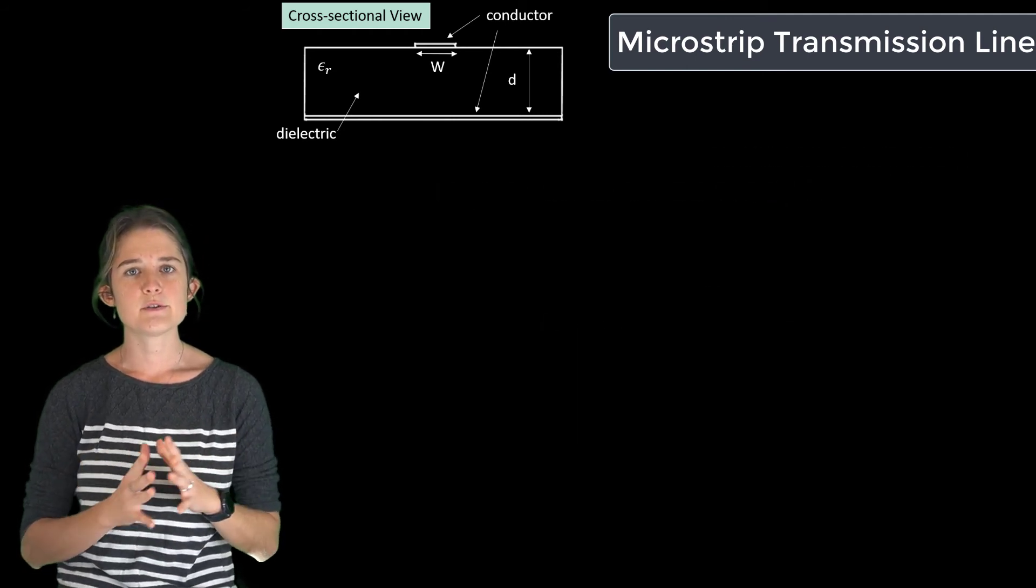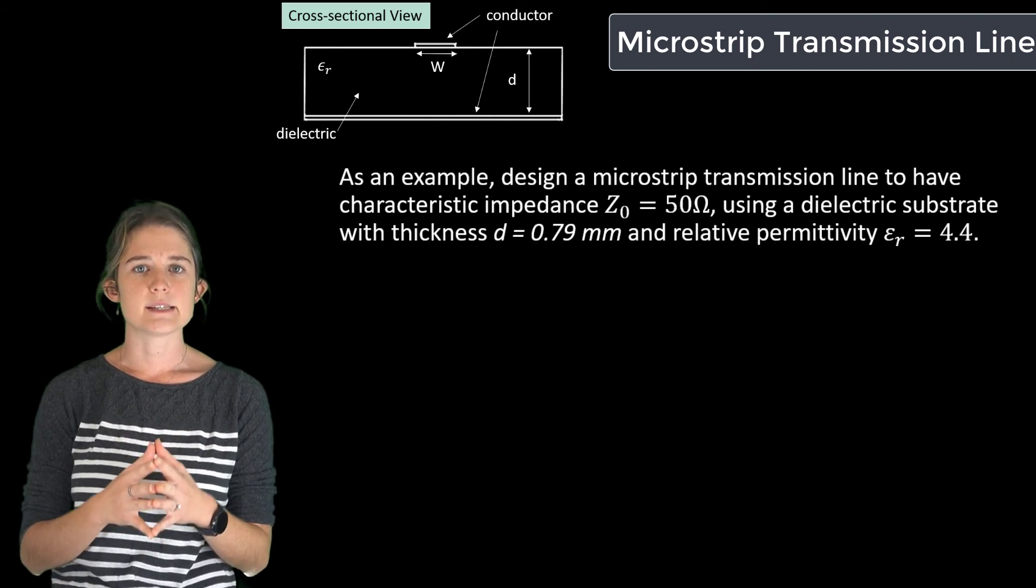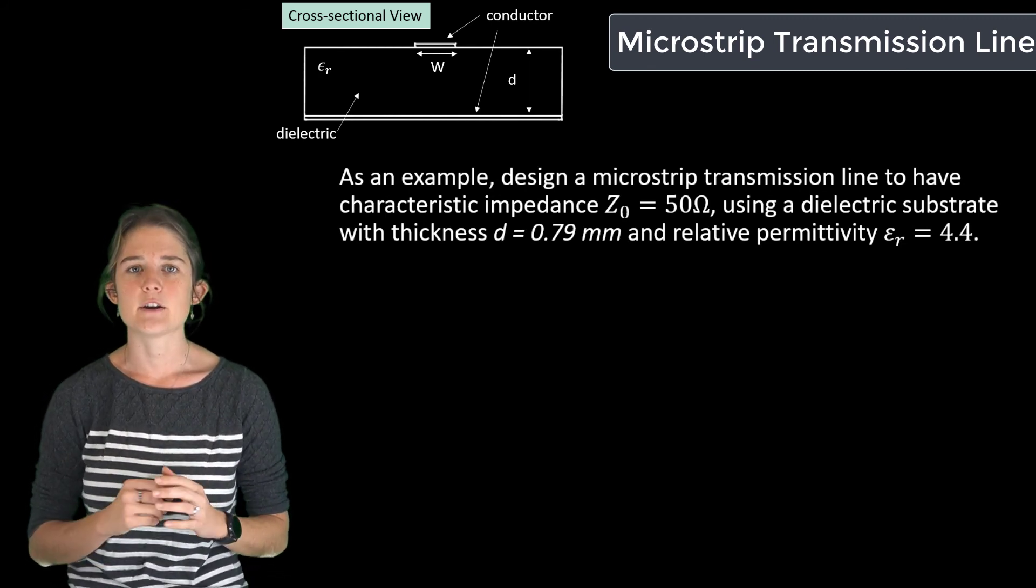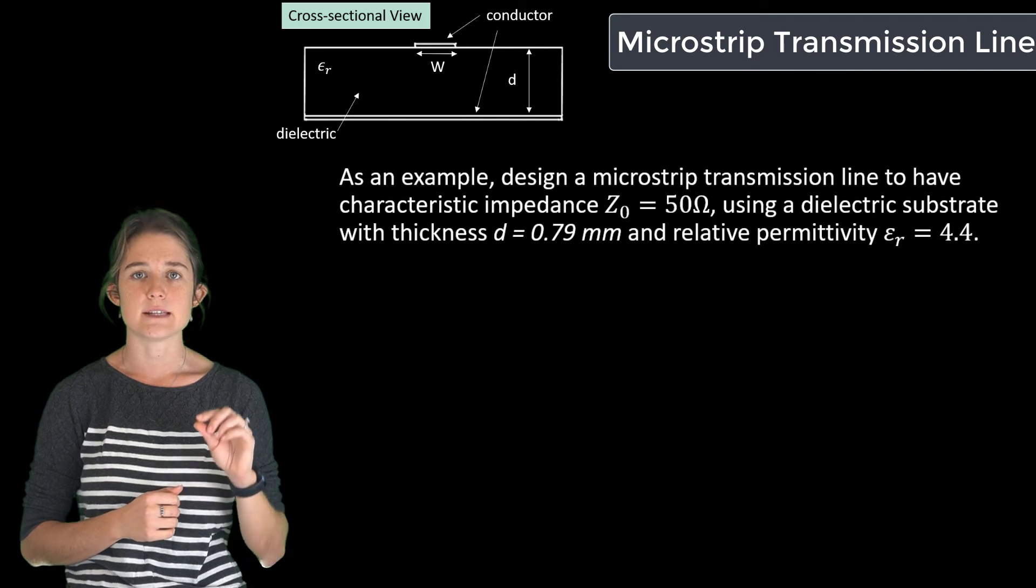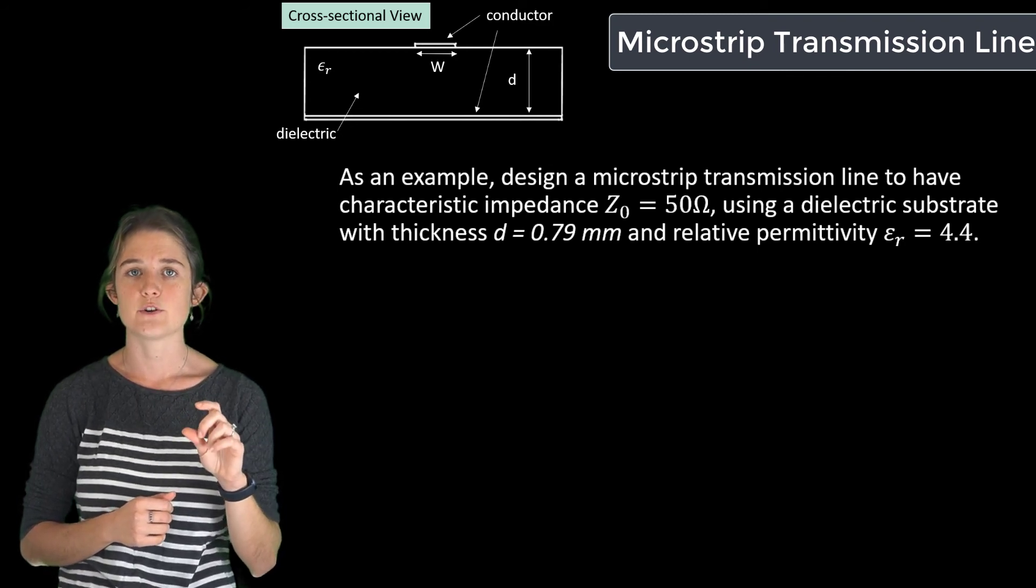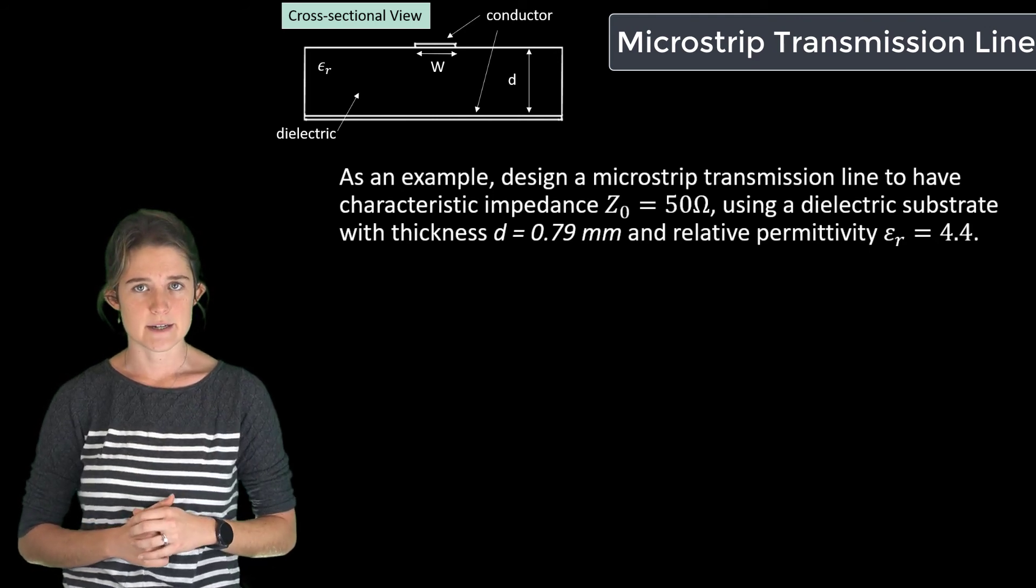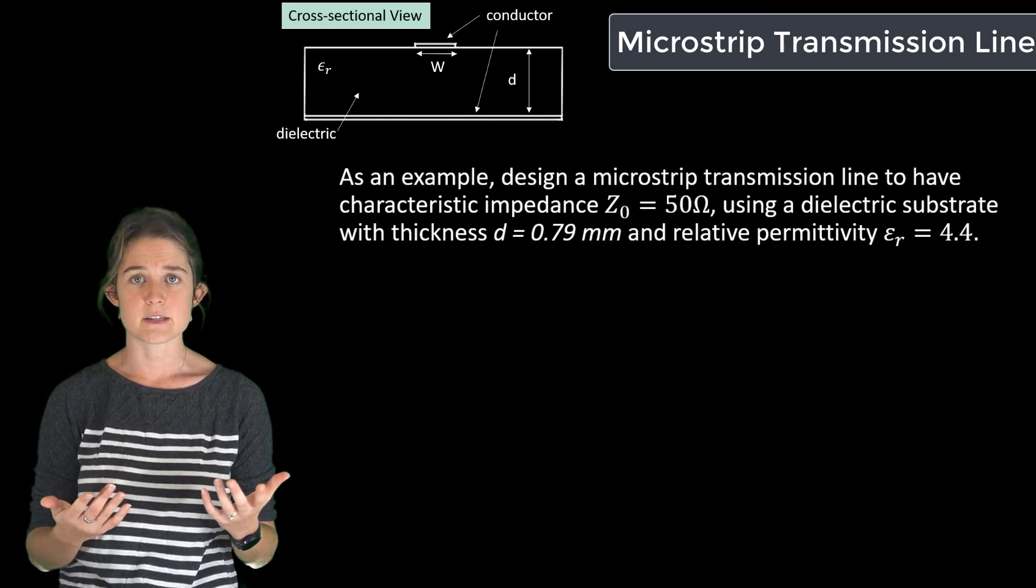As an example, let's suppose we wanted to design a microstrip transmission line with characteristic impedance of 50 ohms on a PCB with dielectric thickness d equals 1/32nd of an inch, which is 0.79 millimeters, and where the dielectric is FR4 epoxy, which has a permittivity of approximately 4.4.